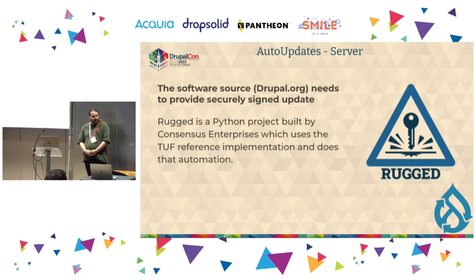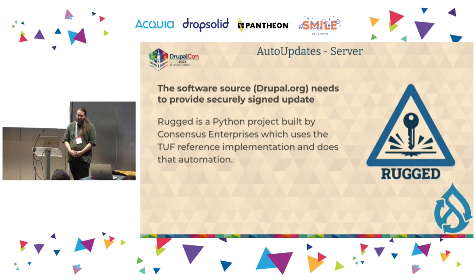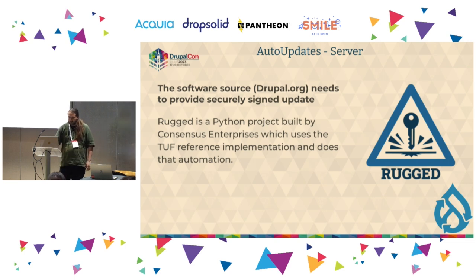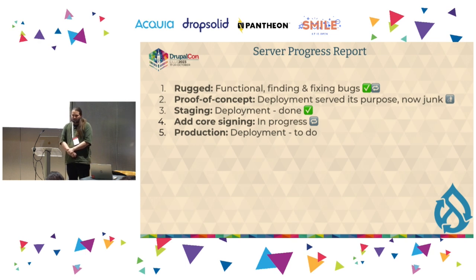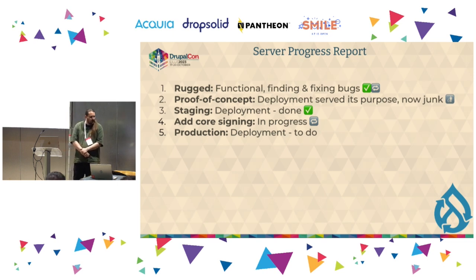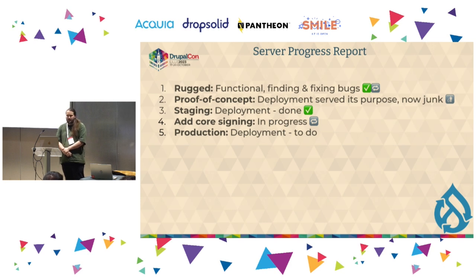TUF is a specification, not an implementation. So we wanted an implementation to automate signing. We worked with Consensus Enterprises to build that and make it able to be automated. At the end of packaging, it can sign everything — he called that Rugged, to go with Tough. The status report is that Rugged is functional. As we're going through the next steps, we're finding and fixing bugs, and making sure it works at scale. We built a proof-of-concept deployment to give the client side a head start on having some actual data instead of speculating on what TUF-signed releases would look like from Drupal.org.